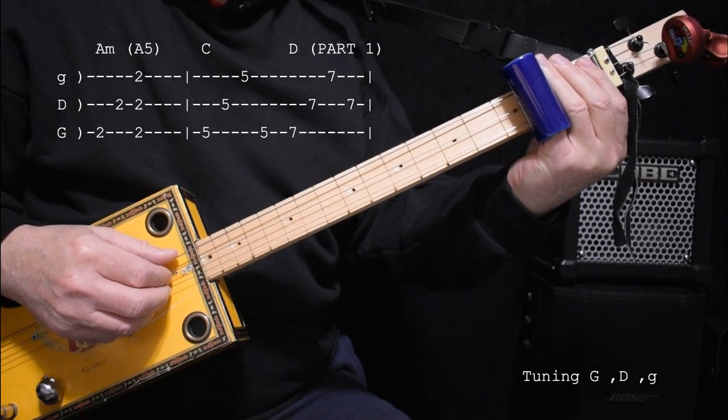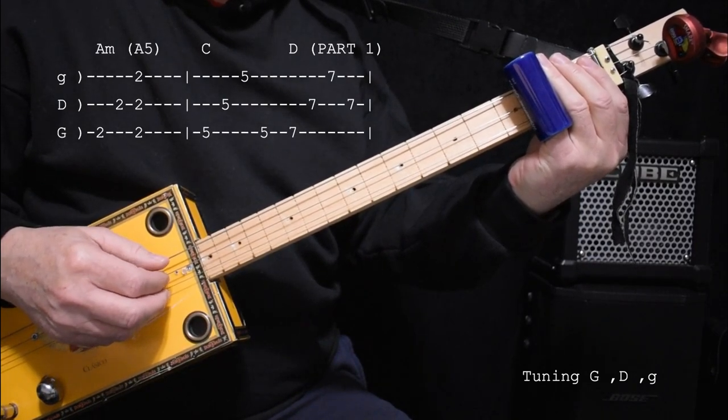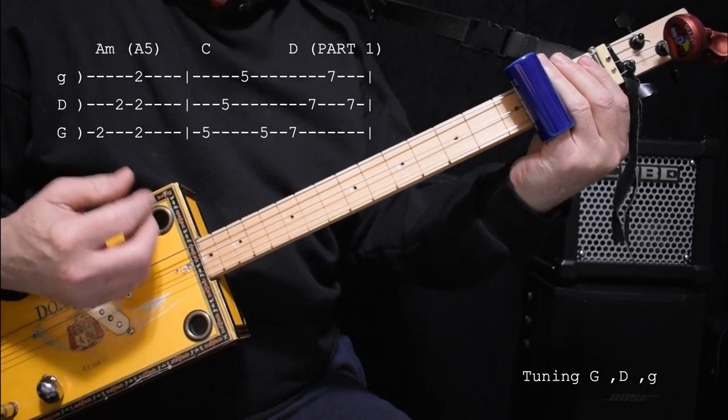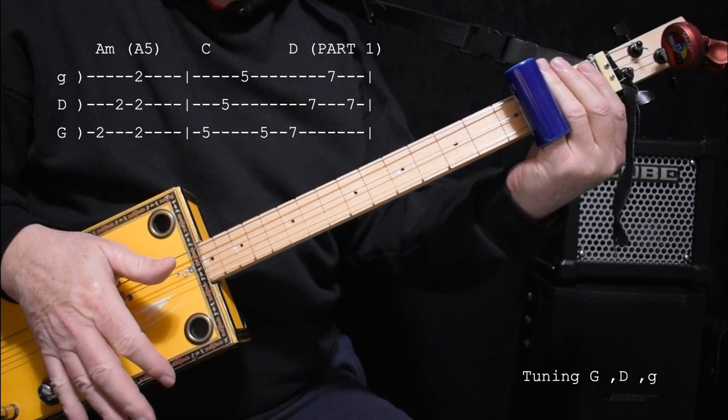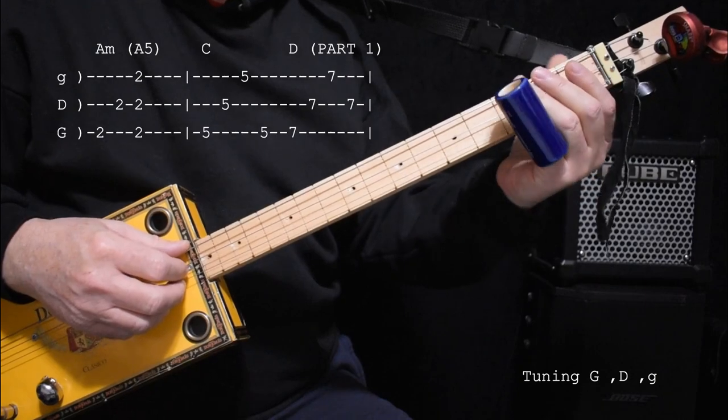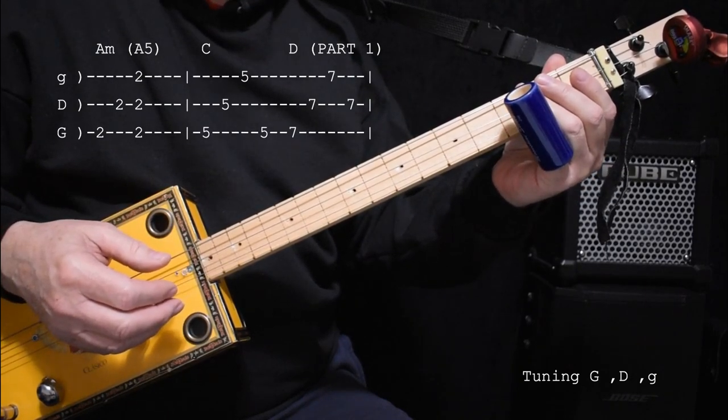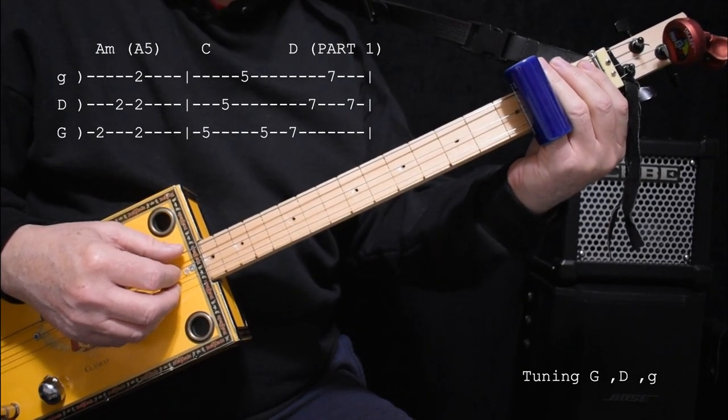So what we're going to do is we're going to hit the low string, then the middle string, and then strum the chord. That gets us very similar to what Johnny Cash did on the record, or his guitar player.